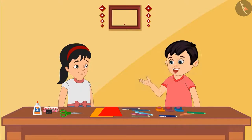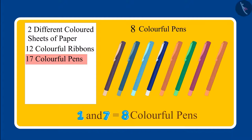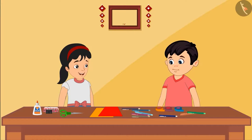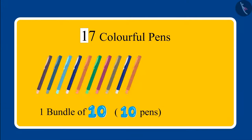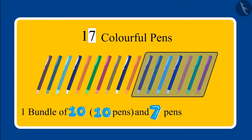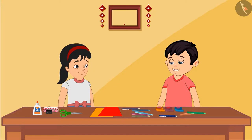Chotu realizes he also read the number of pens incorrectly — he added one and seven and got eight pens. Now, can you tell the correct number of pens? One means one bundle of ten, and seven means seven more pens, so the total is seventeen pens.